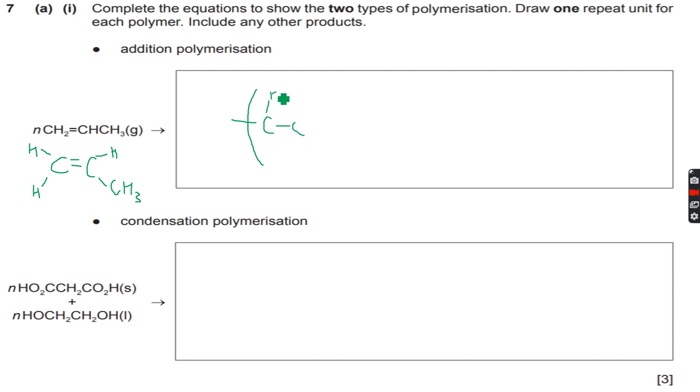When we polymerize this we will have C, H, H, H, and CH3. This will be polypropene, one repeat unit of polypropene. As you know, there are no other products. Now condensation polymerization.